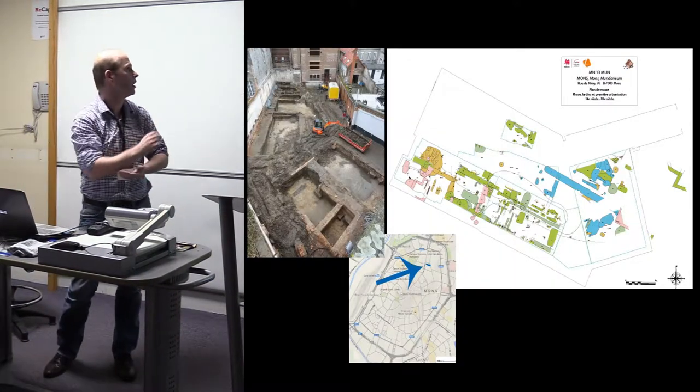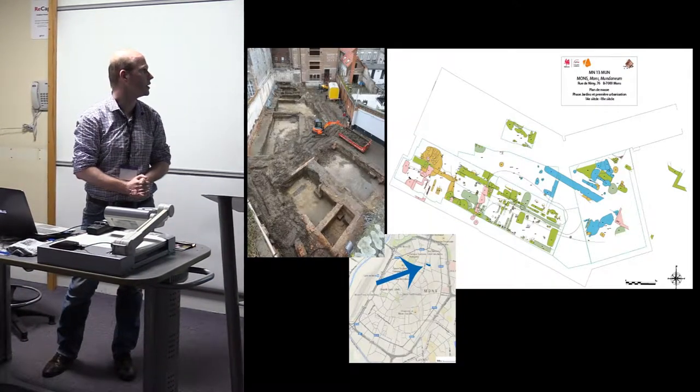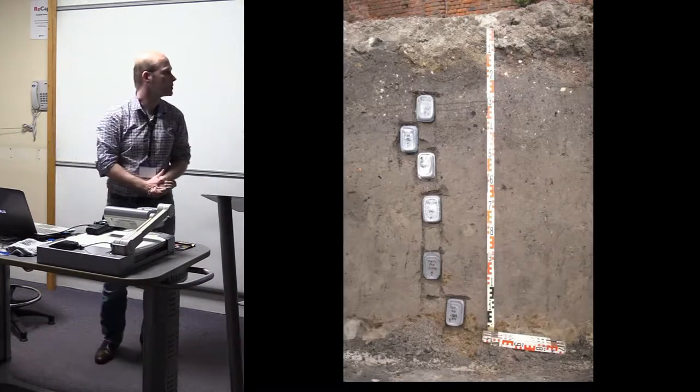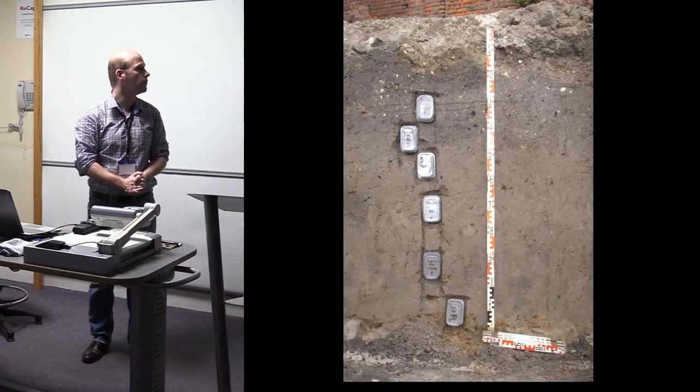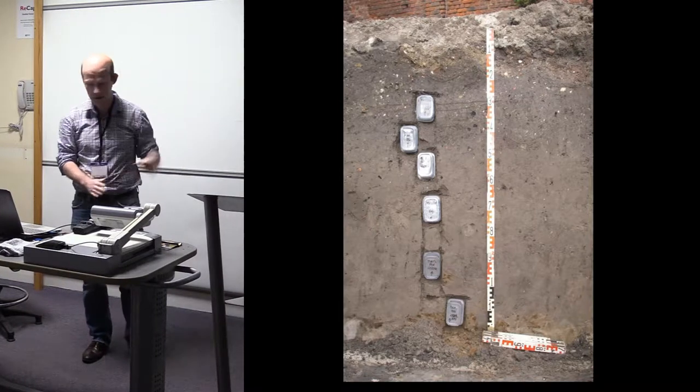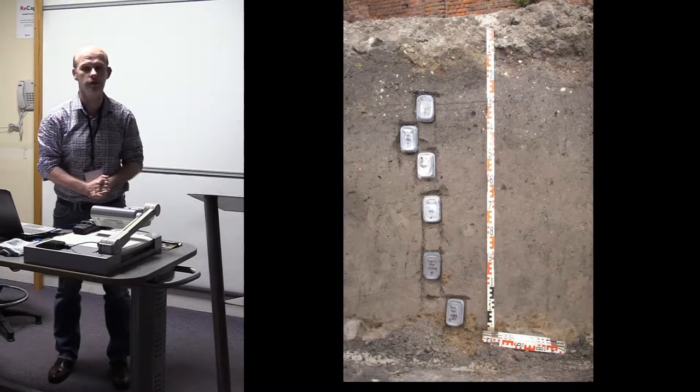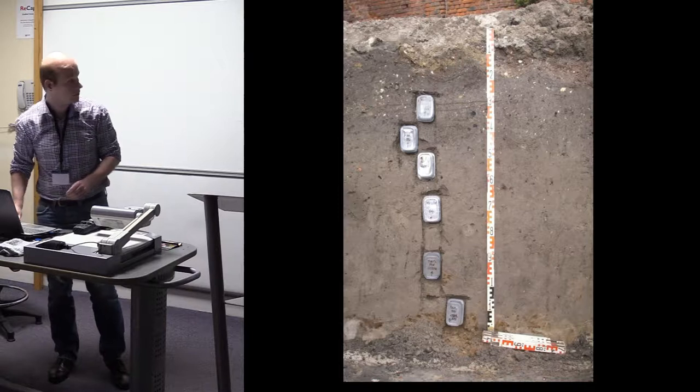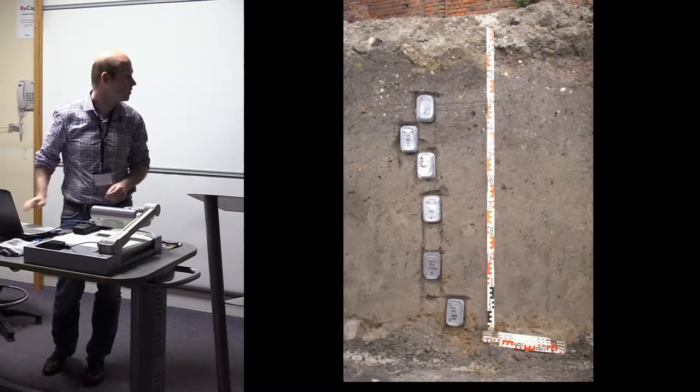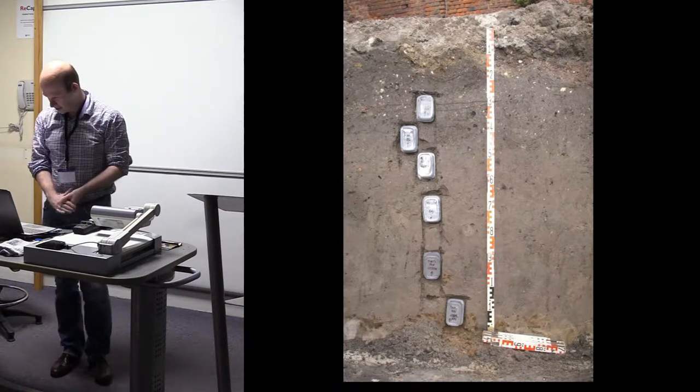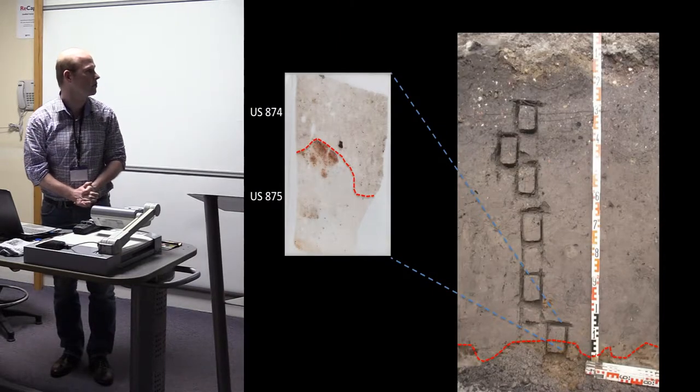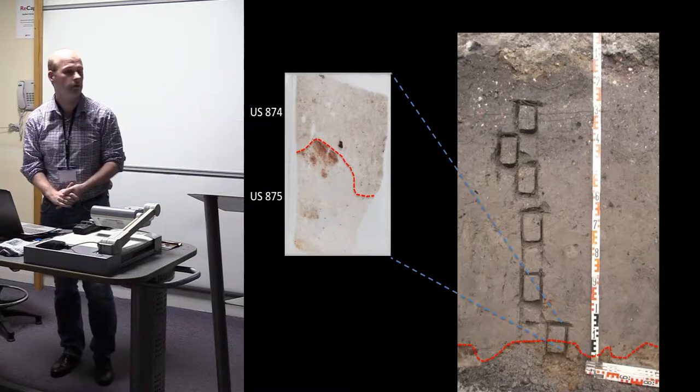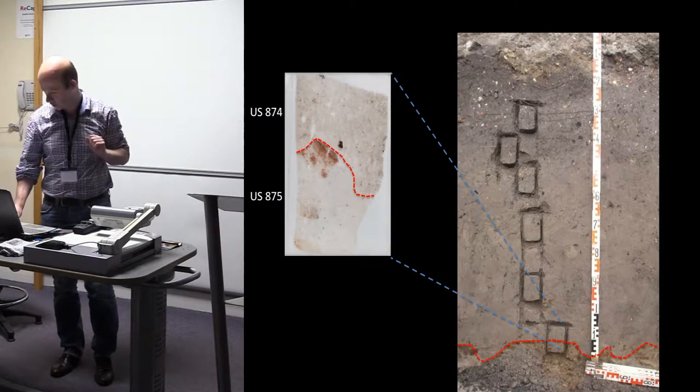This is an aerial photograph of the excavation. We basically sampled three profiles, and this one here was basically our reference profile, and I will be focusing on this one today. We can see a very thick dark earth, not much to see within it, so basically we'll have a look at the micromorphology. When we start, I suppose I propose that we go from the bottom to the top.